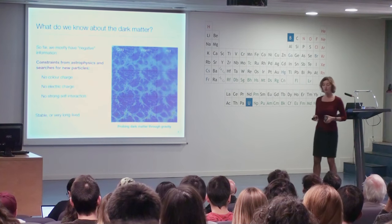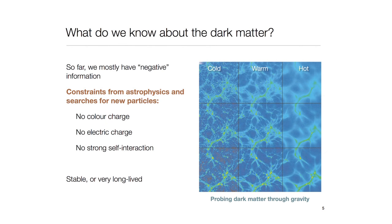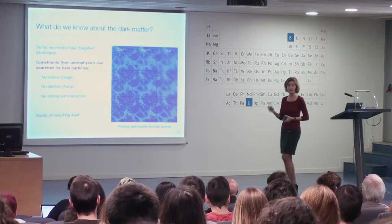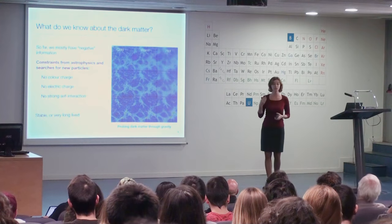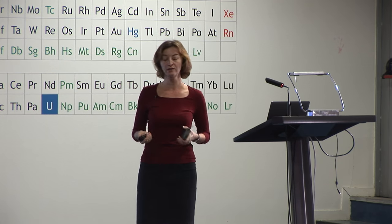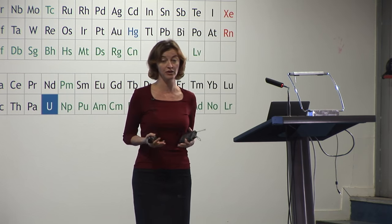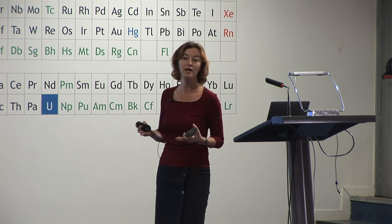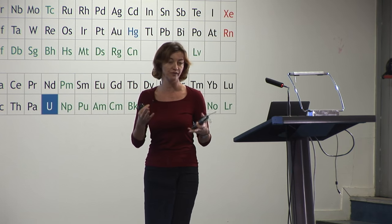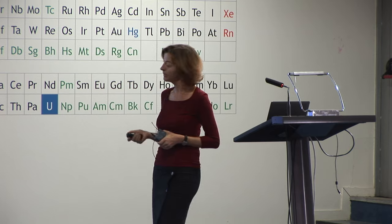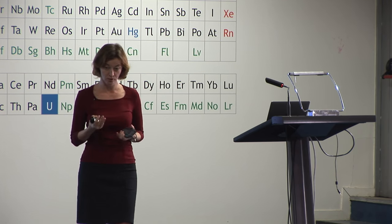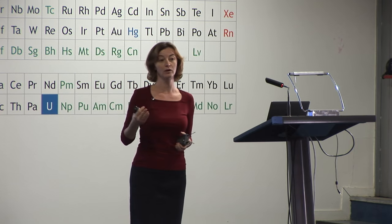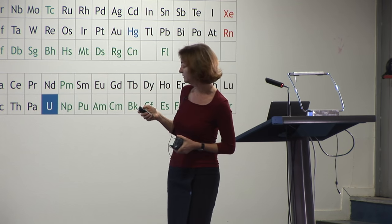What do we actually know about dark matter? We can study it through gravity, but what else? We have constraints from astrophysics and from various searches. It does not have any color charge or electric charge, and it might have some self-interaction that we don't really know about, but it doesn't seem to be very strong — constraints coming from things like the Bullet Cluster. And in order to be the dark matter in our universe, it has to be either stable or, if it decays, very long-lived.